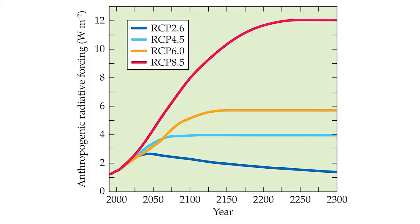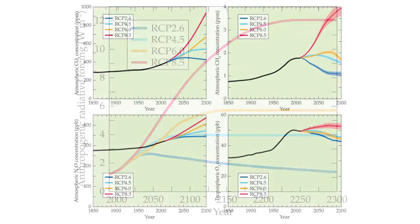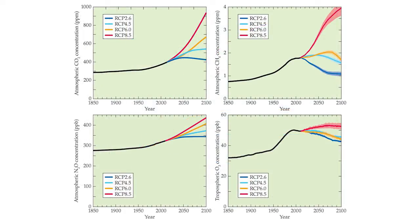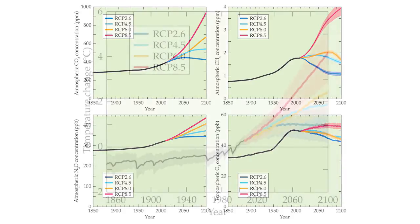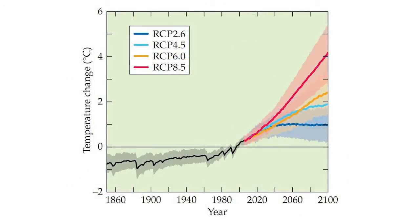They serve as if-then statements: if human activities follow scenario RCP x.x, then the global climate model predicts that atmospheric concentrations of the greenhouse gases will be y and the climate will be z.